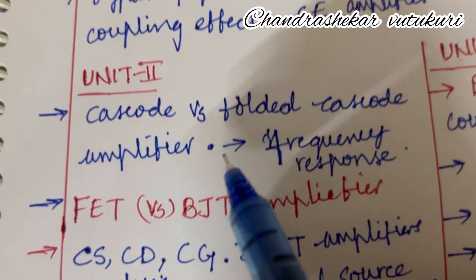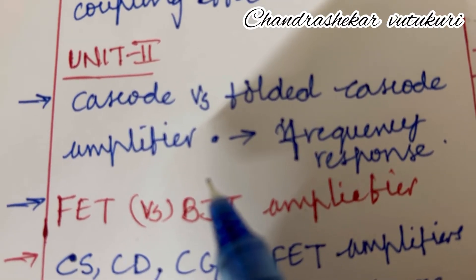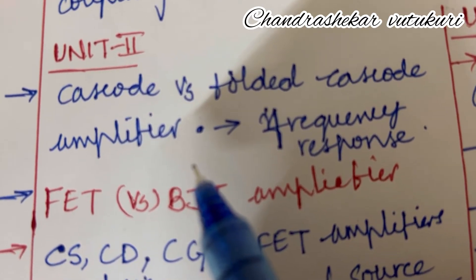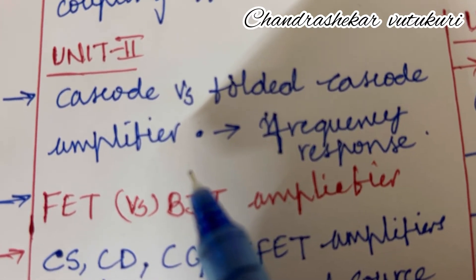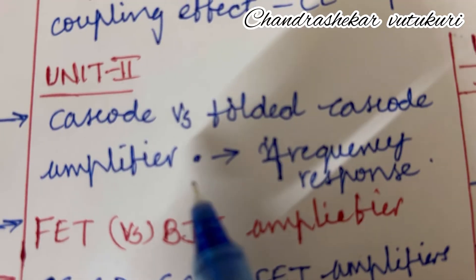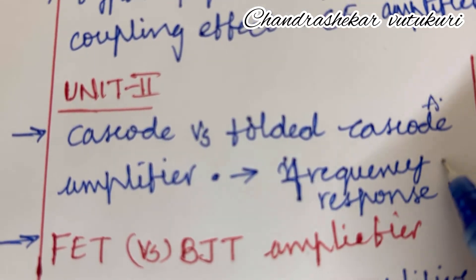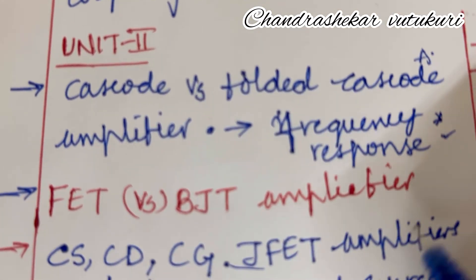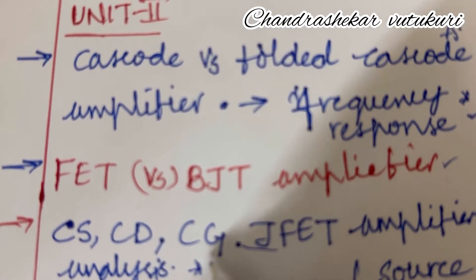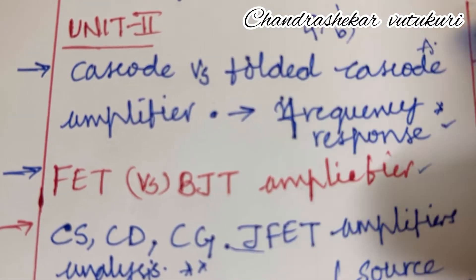Now for the second unit, which is also very important. By the end of this video I will let you know which units you are supposed to prepare if you are an average student and how many units to prepare to score good marks. CAS code versus folded CAS code is set as the topmost question related to amplifier and frequency response, with a short question. FET versus BJT amplifier — their differences and classifications — and CS, CD, CG JFET amplifier analysis is set as the topmost sure-shot question which may occur in 4AB or 5AB.